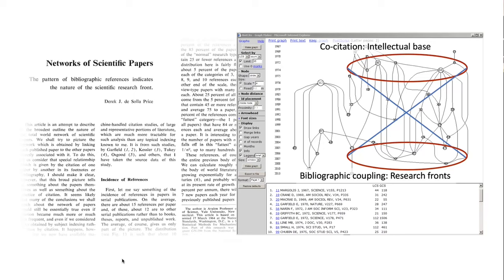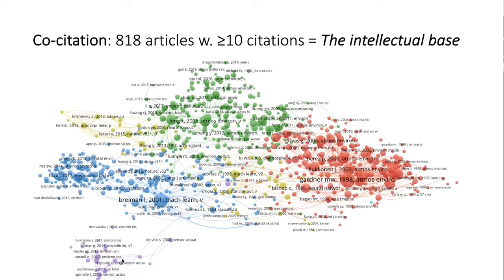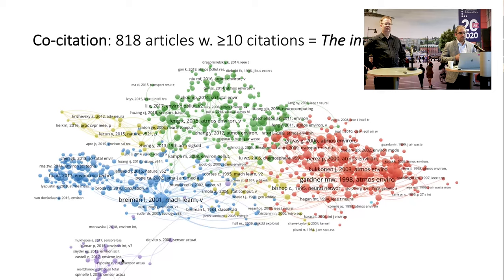We can see this as a space-time model, going from history forward to the future. This material was used in our presentation, where we looked at the background — the history of research on air quality in relation to artificial intelligence. By looking at different clusters, we could find different historical paths from where the research came. These are the articles most often cited in the dataset we created.